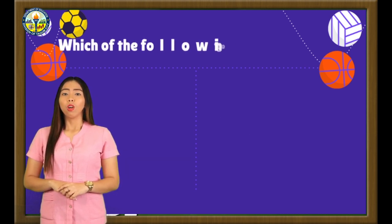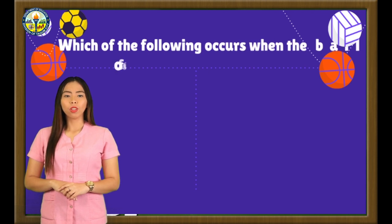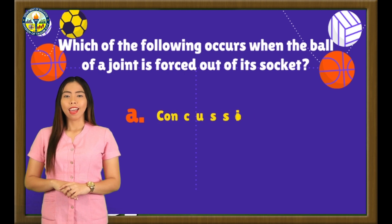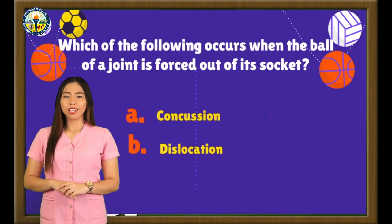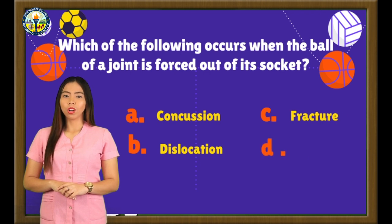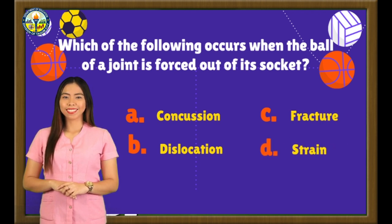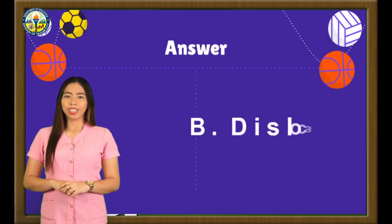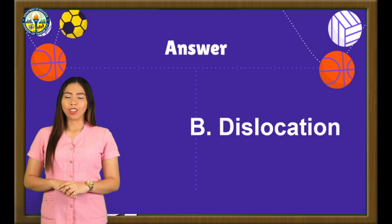Number 2. Which of the following occurs when the ball of a joint is forced out of its socket? A. Concussion. B. Dislocation. C. Fracture. Or D. Strain. The correct answer is letter B: Dislocation.